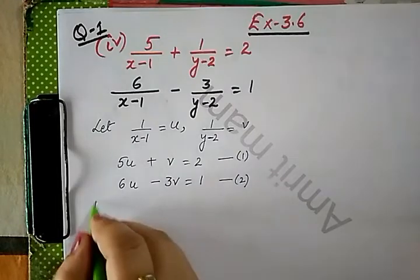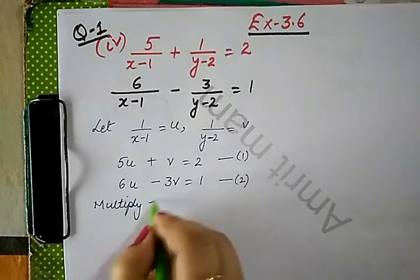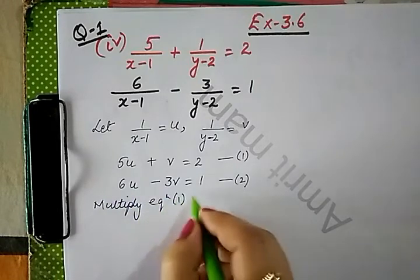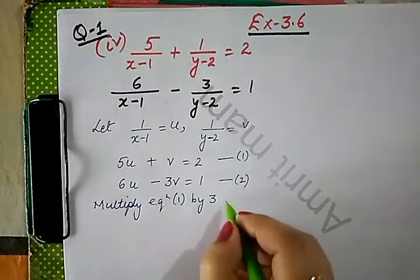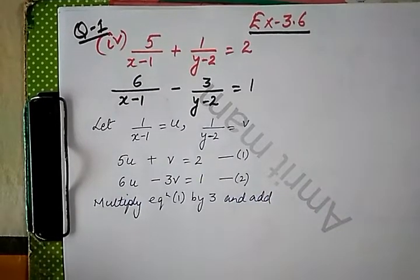Let us multiply equation number 1 by 3. Hum equation number 1 ko 3 se multiply kar dete hain and add both the equations.